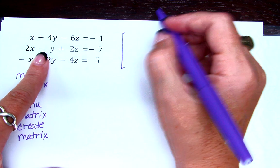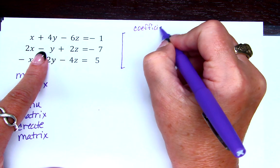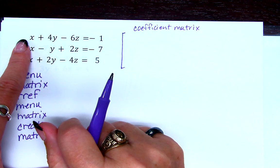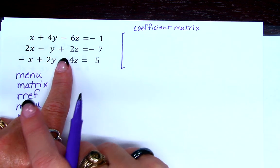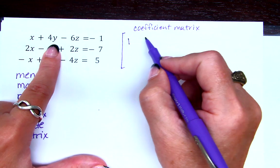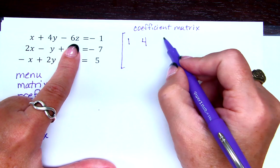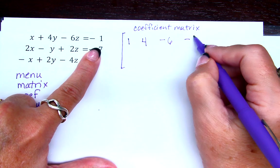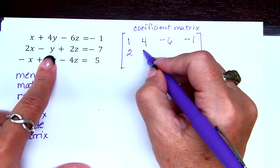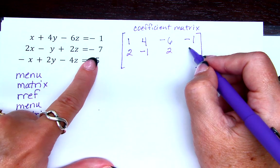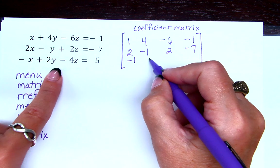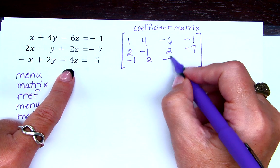So the first thing we're going to write right here is called a coefficient matrix. This is a coefficient matrix. That means I'm going to look at my system and only write down the coefficients or the numbers. So in the first row, I'm going to write 1, 4, negative 6, and negative 1. In the second row, I'm going to write 2, negative 1, 2, negative 7. And in the last row, negative 1, 2, negative 4, and 5.